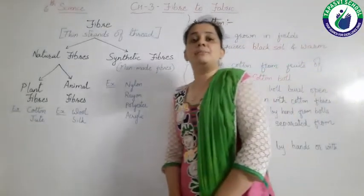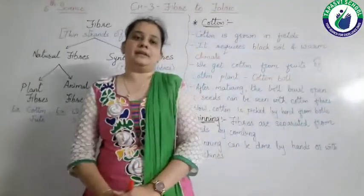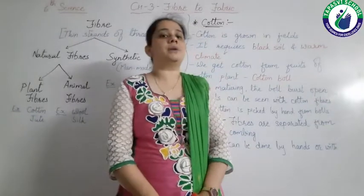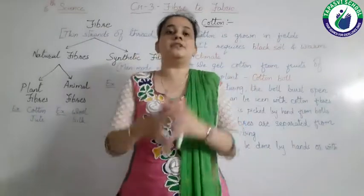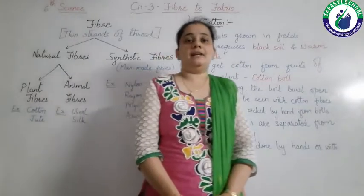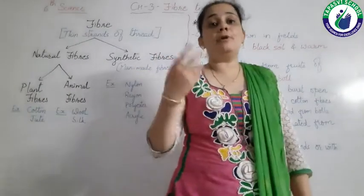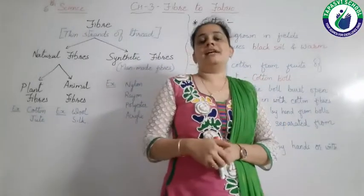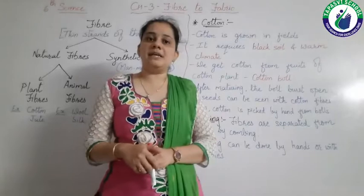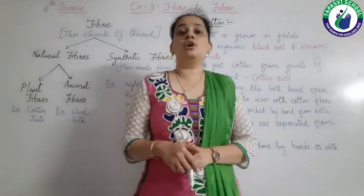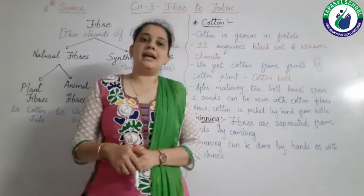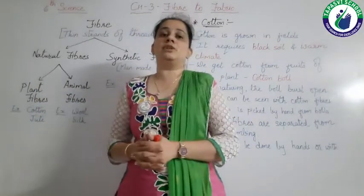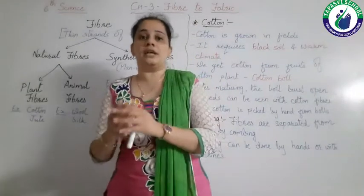What do you mean by Fiber and what do you mean by Fabric? Fibers are nothing but the thin strands of a thread. When we see any thread, it is made up of 3 to 4 thin strands and this is known as Fiber. And Fabric means the cloth. So we know that we have a variety of clothes, and we wear different types of clothes in different seasons and different occasions.